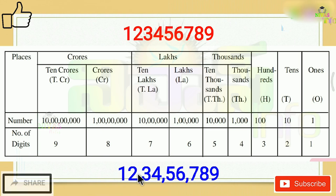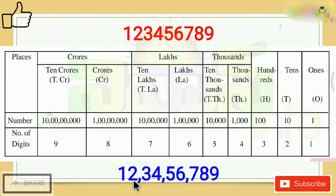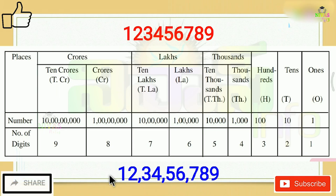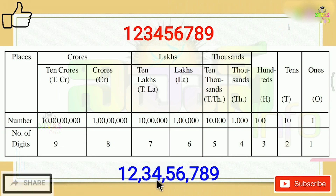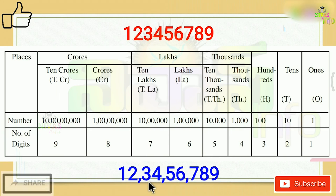Now it is easy to use this system: 12 crores, 34 lakhs, 56,789. The rule for placing commas is: the last 3 digits form one group, then every 2 digits after that gets a comma. So you start from the right, group the last 3 digits, then place a comma after every 2 digits going left. Using crores, lakhs, and thousands makes it easy.